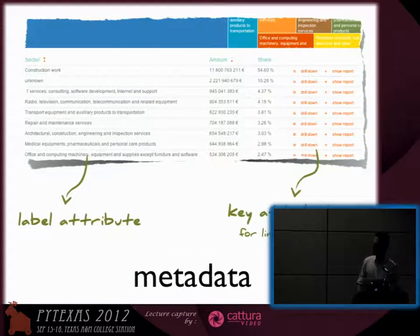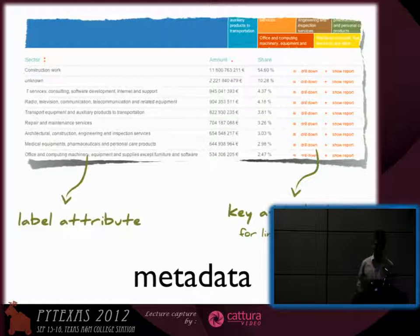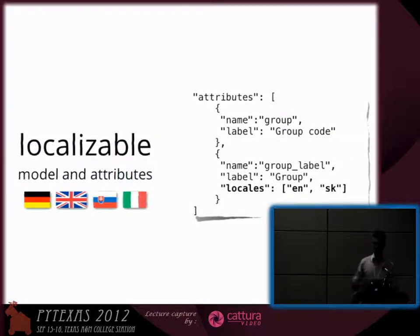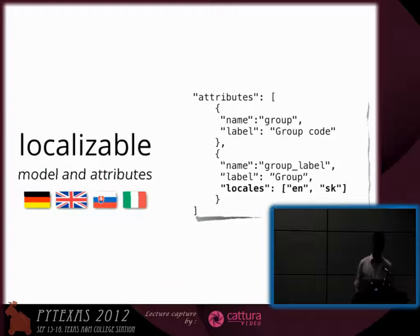Cubes also allows you to put more metadata on top of your data. So this attribute is going to be a label which you use in the application, and this attribute is going to be a key which you use for aggregation. It's completely localizable at all levels — at the logical model level and also at the data level.